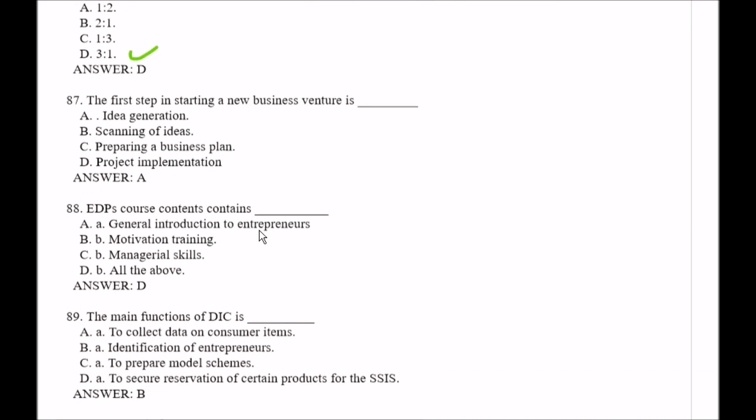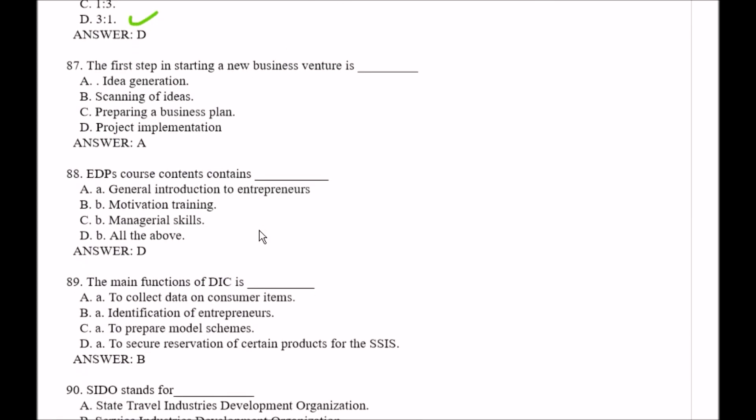Question number 87: The first step in starting a new business venture is — Option A, idea generation; Option B, scanning of ideas; Option C, preparing a business plan; Option D, project implementation. The right answer is Option A, idea generation.